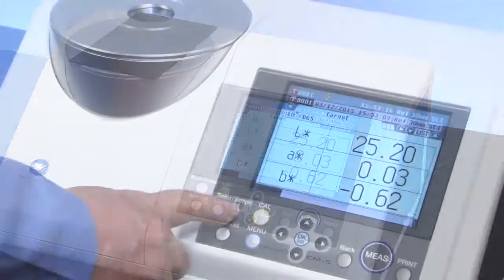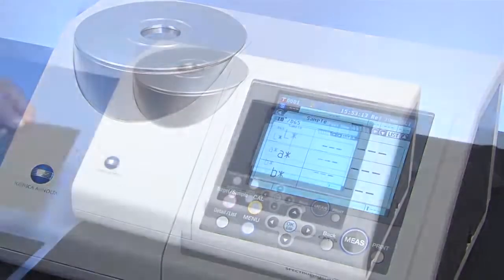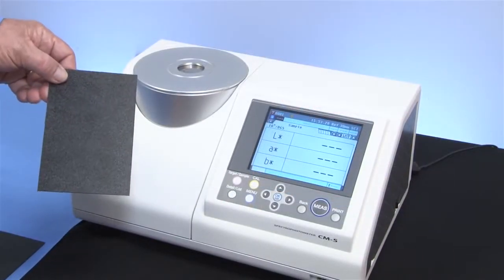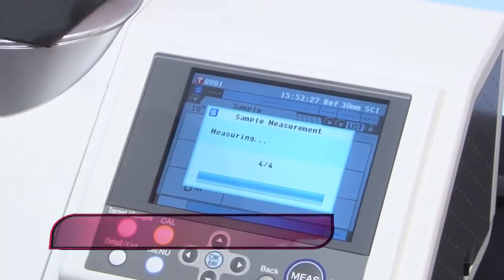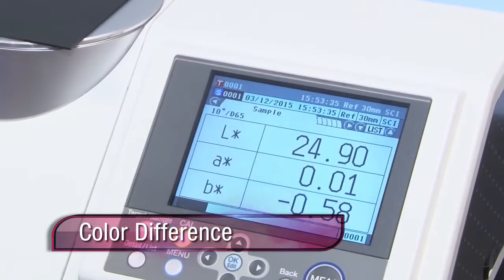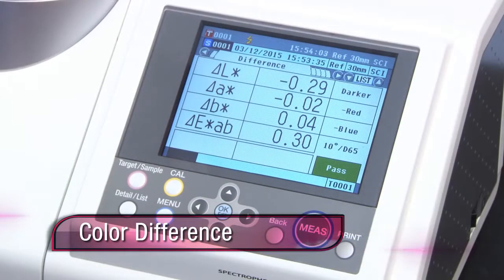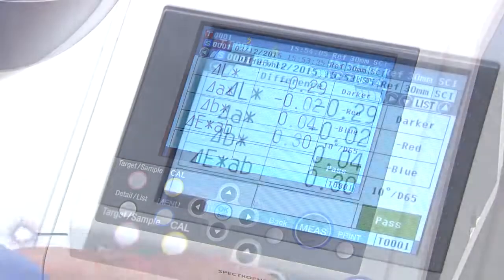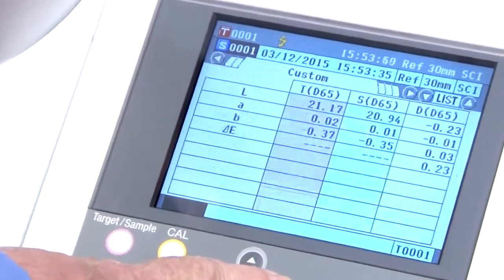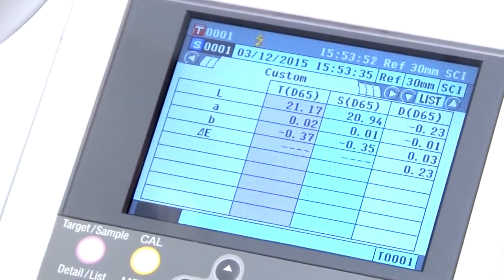For color difference, measure the sample color and the standard color, then save the values for each measurement. The differences between the sample and standard are calculated using the resulting colorimetric values. Differences are shown numerically to identify color inconsistencies between products.